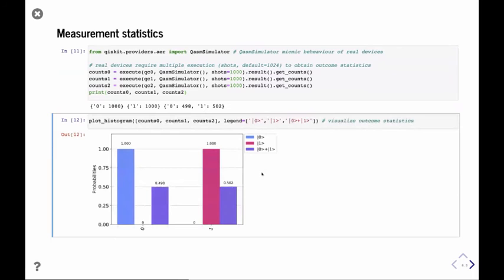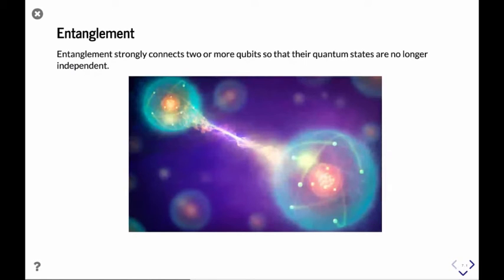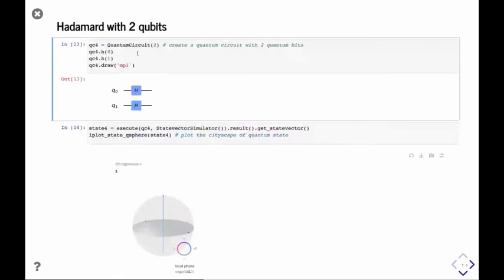As I mentioned in the circuit composer demo, entanglement is a phenomenon of more than one qubit. Before I introduce entanglement, we can expand the concept of superposition to a two-qubit circuit and see how it looks in the Qsphere. I build a quantum circuit with two qubits and apply the Hadamard gate.